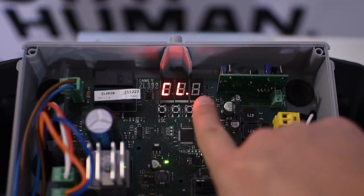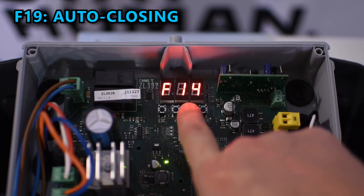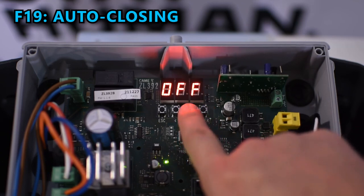If you want to enable auto-closing you can do that in F19, choosing the number of seconds you want the barrier to stay open before closing automatically.